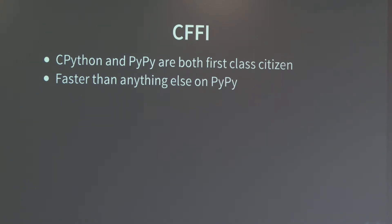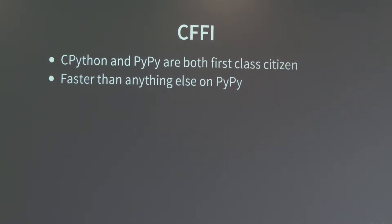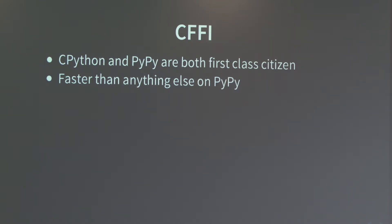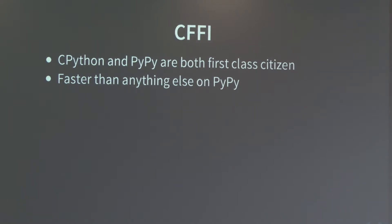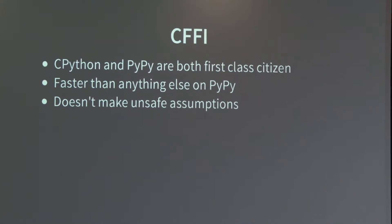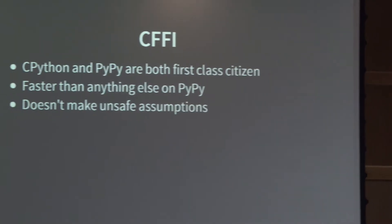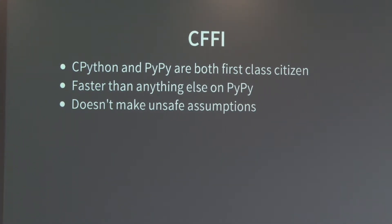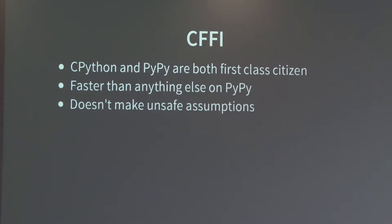We did some benchmarks and it's only a bit slower than just having a regular C function calling another C function. So if you need performance, you should use PyPy and CFFI together. On CPython it's OK — not the fastest thing, but pretty decent. If you're having performance issues with CPython, you should probably just use PyPy. And yeah, it doesn't make any of those crazy assumptions that ctypes does — it doesn't try to guess the types for you. You have to specify the types all the time, and it won't segfault because of CFFI doing something crazy, only because of C madness.